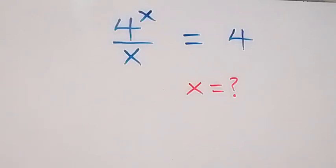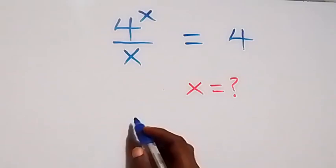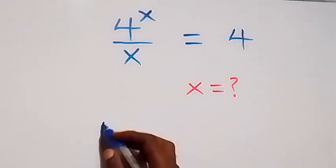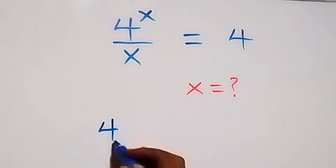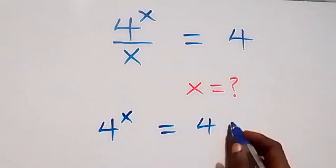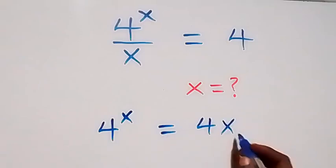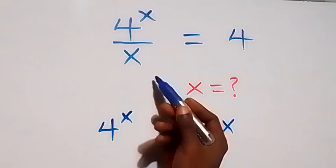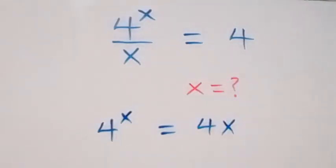Hello, you are welcome. How to solve for x in this Olympiad problem. From what you are given here, we can write this as 4 raised to power x equals to 4x, just by cross multiplication.